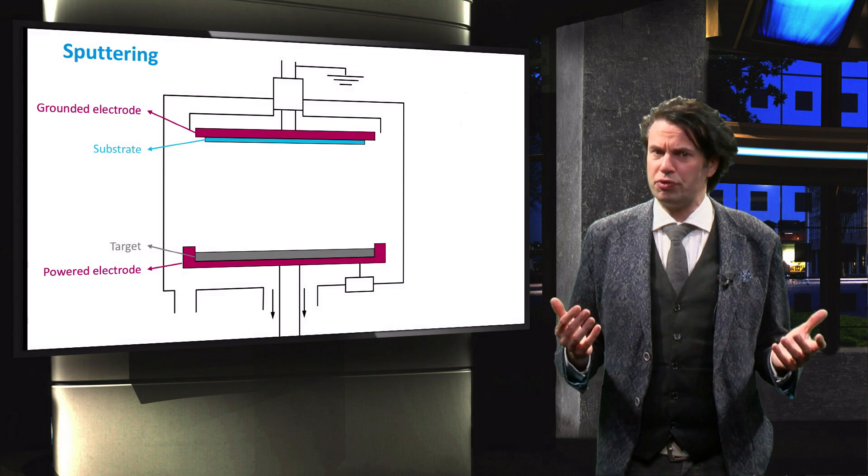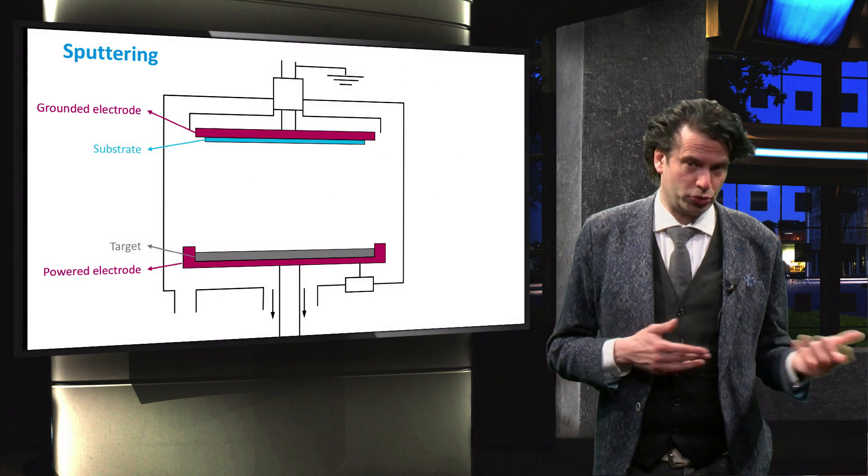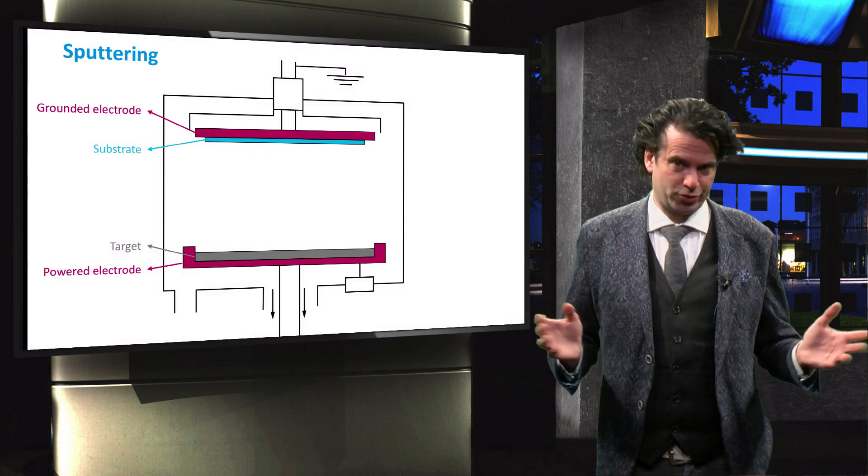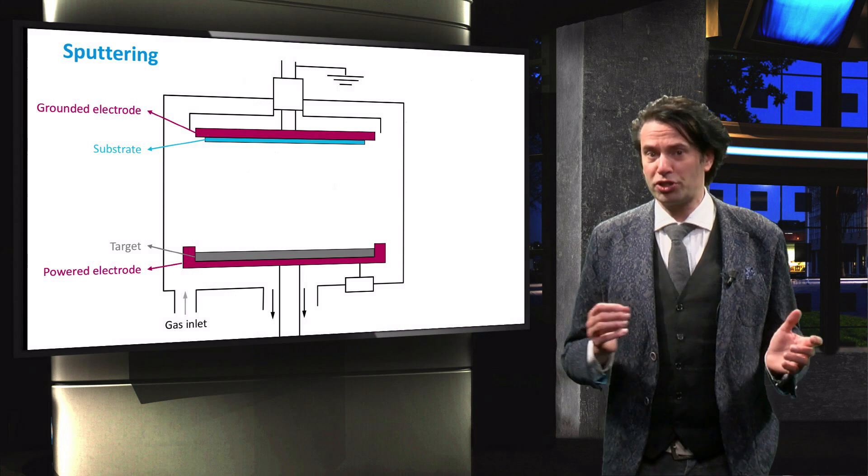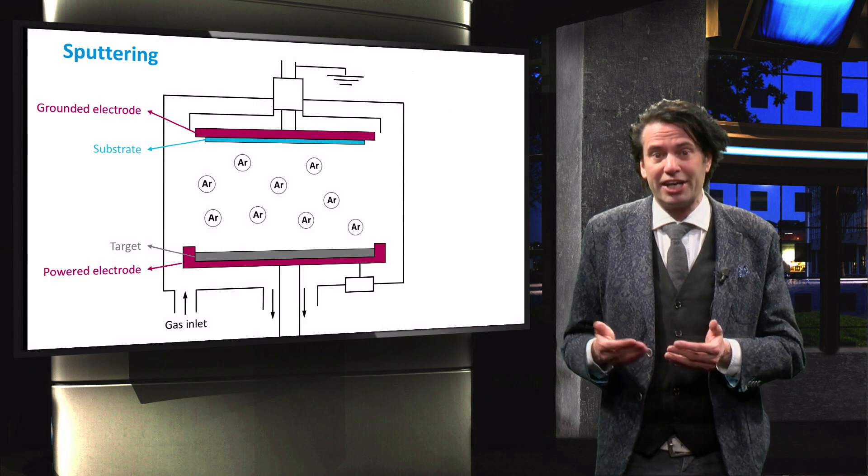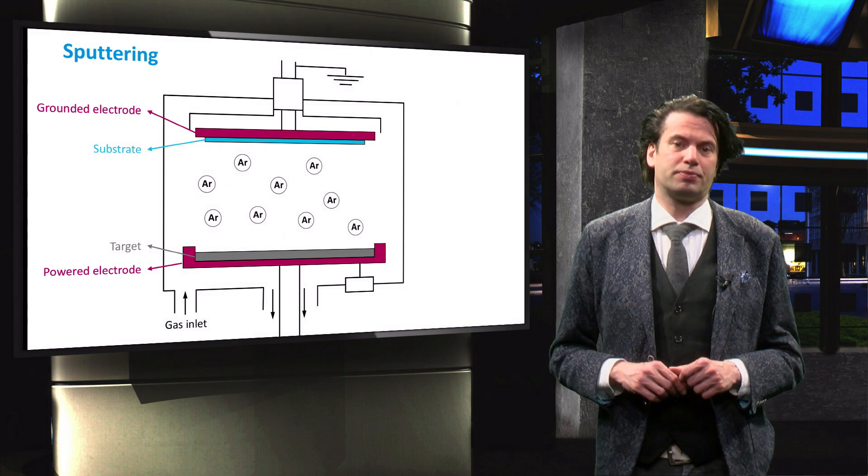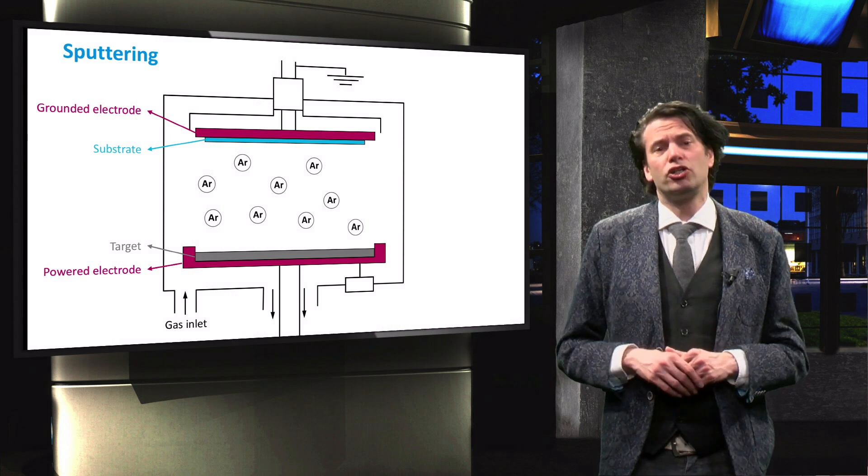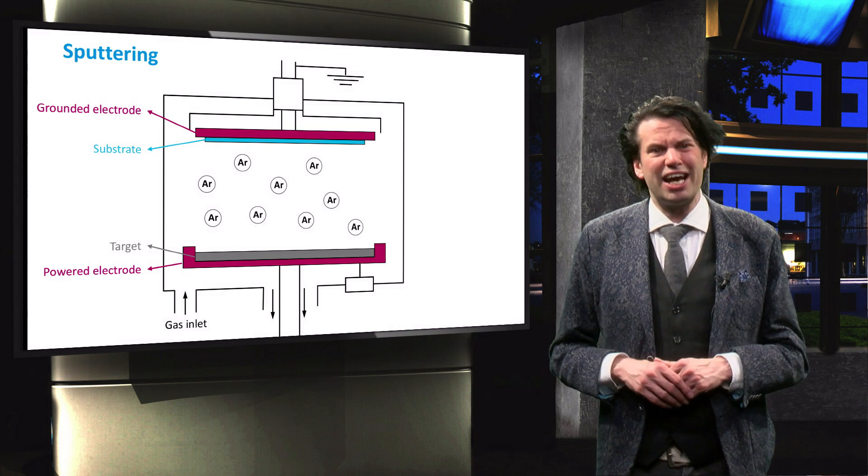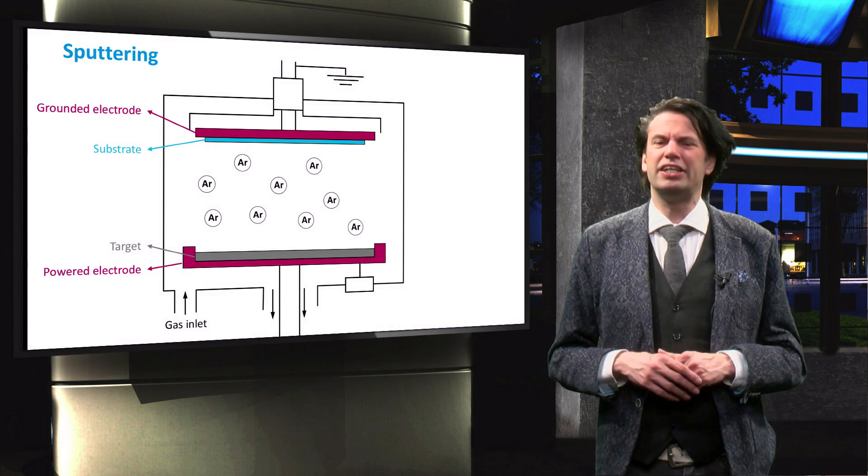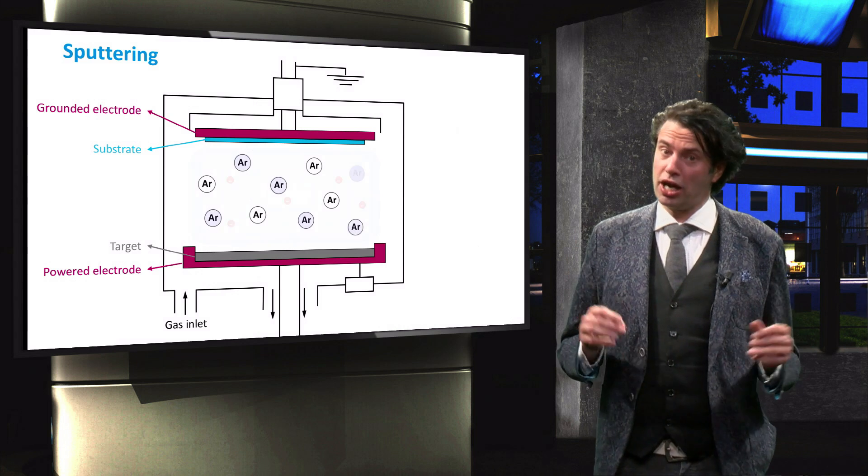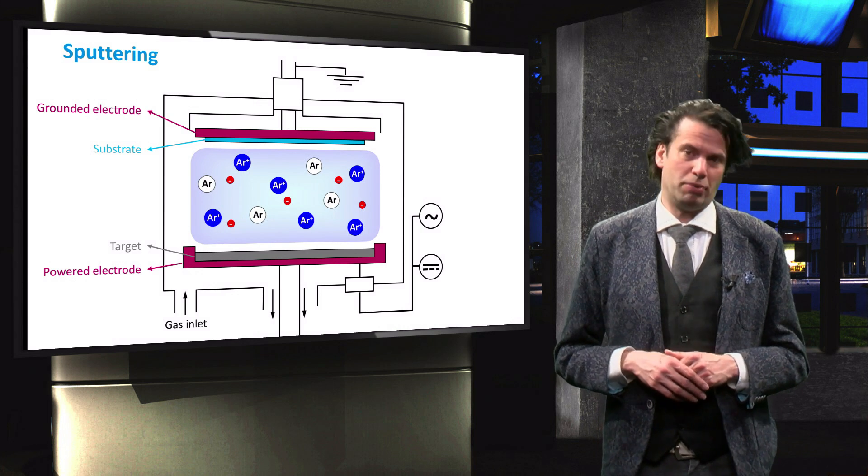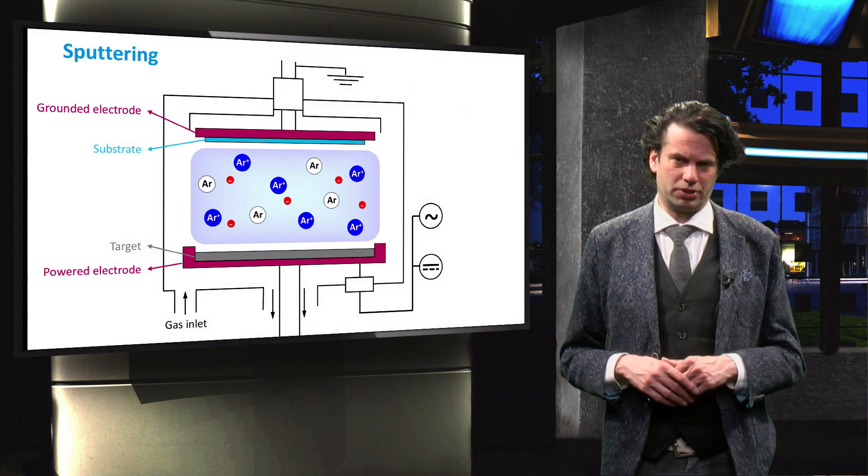The target material, so the material we want to evaporate and sputter onto the substrate, is part of the powered electrode or cathode. The process starts by introducing a gas in the vacuum chamber. Argon is generally used because it is inert, susceptible to ionization, and the atoms are relatively heavy. A plasma is then ignited using either a DC or an AC bias, depending on the target material.